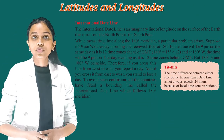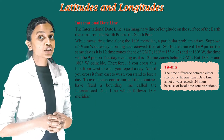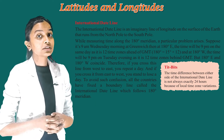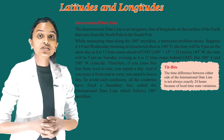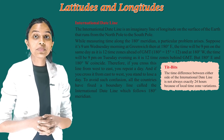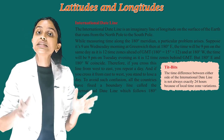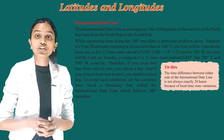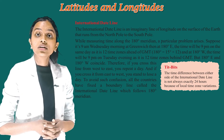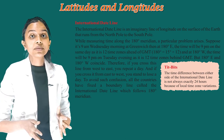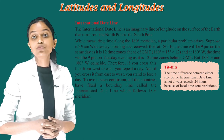The International Date Line is an imaginary line of longitude on the surface of the earth that runs from the North Pole to the South Pole. While measuring time along the 180 degree meridian, a particular problem arises. Suppose it is 9am Wednesday morning at Greenwich — then at 180 degrees east, the time will be 9pm on the same day, as it is the 12th time zone ahead of GMT.